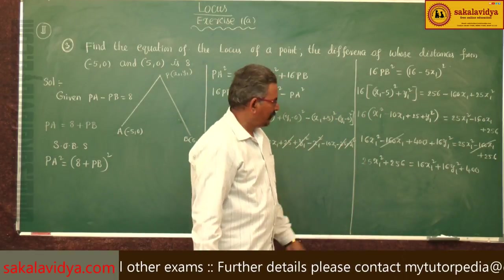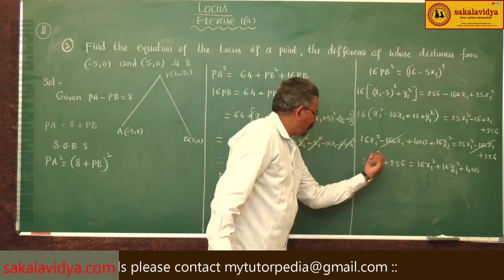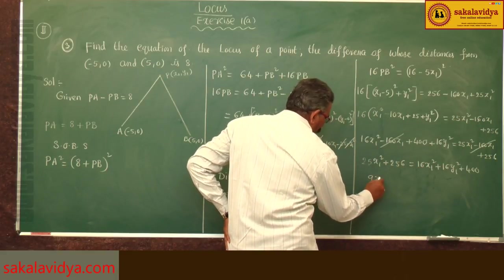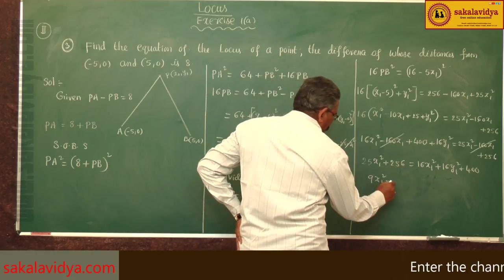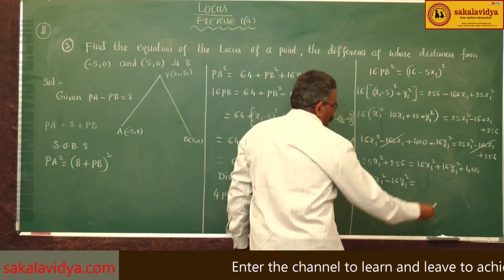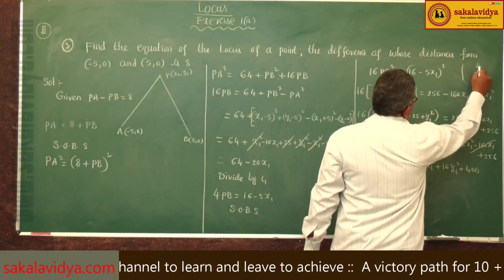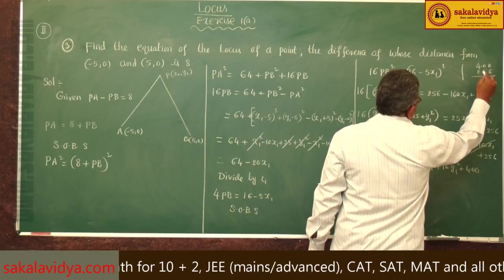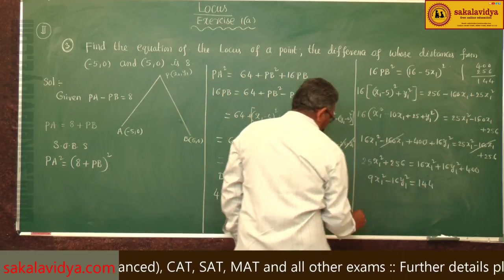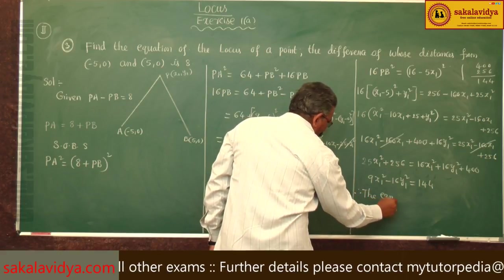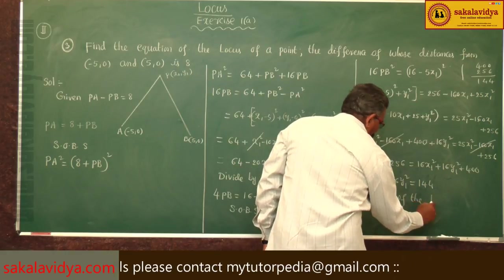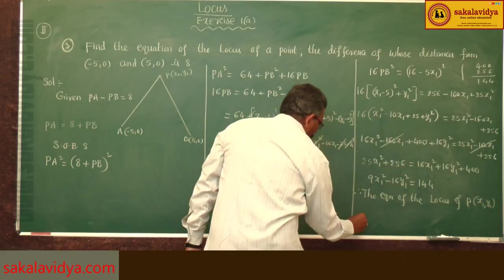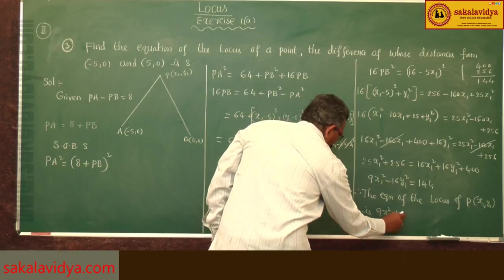Bringing 16x1 squared and 16y1 squared to one side and the constant 256 to the other side: 25x1 squared minus 16x1 squared minus 16y1 squared equals 400 minus 256, giving 9x1 squared minus 16y1 squared equals 144. Therefore, the equation of the locus of P(x1, y1) is 9x squared minus 16y squared equals 144.